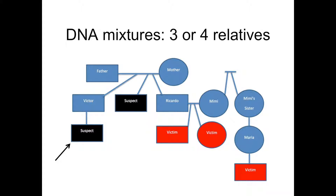In this pedigree of the family, shown in blue are the relatives — parents and other individuals. The victims are shown in red. They are a pair of siblings along with a cousin. The two suspects were also family members. The one of interest in this trial — the cases had been severed — is shown on the bottom left. He is a cousin of the victims.